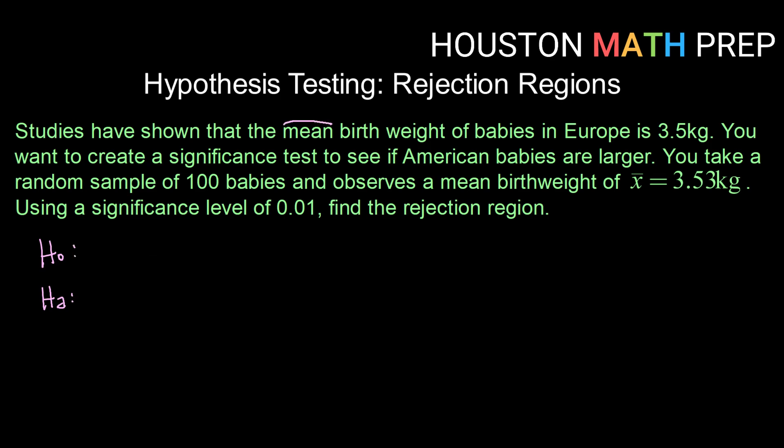Here we are talking about mean birth weights. So the parameter that we're going to be talking about is mu. Our null hypothesis always has to be a statement of equality about the status quo. Studies have shown that the mean birth weight in Europe is 3.5. So our null hypothesis is that mu is equal to 3.5. What we're interested in is the claim that we think American babies are larger. Larger would indicate I have an alternative hypothesis of mu greater than 3.5.